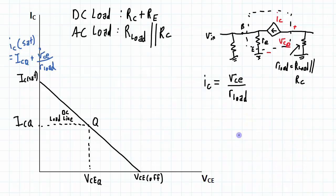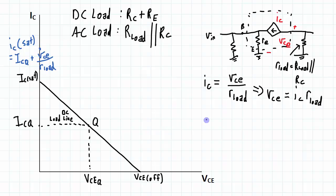At the other end of the load line I want to look at the VCE off. First of all I can look at this relationship between IC and VCE and just rewrite it in terms of VCE. And then considering my cutoff point from an AC point of view, designated as VCE off,